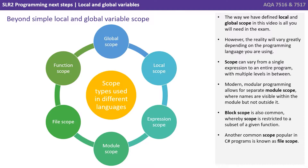Modern, modular programming allows for separate module scope, where names are visible within the module but not outside it. Block scope is also common, where scope is restricted to a subset of a given function. Another common scope, popular in C#, is known as file scope.